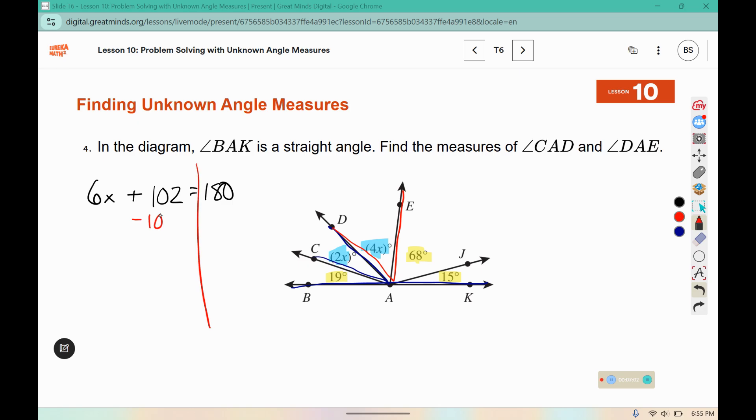Subtract 102 from both sides. 10 minus 2 is 8, 7 minus 0 is 7, 1 minus 1 is 0. So we still have 6x over here on the left. Divide both sides by 6. That leaves us with x, and 13.